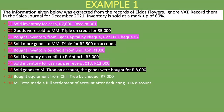On the 23rd, we bought equipment from Chiltree by cheque for 7,000 Rand — this does not go in the sales journal as we're buying equipment, not selling goods on credit. On the 30th, Mr. Titan made a full settlement of account after deducting a 10% discount. This also does not go in the sales journal — a debtor is paying us, which would be recorded in the cash receipts journal. We highlight both in purple.